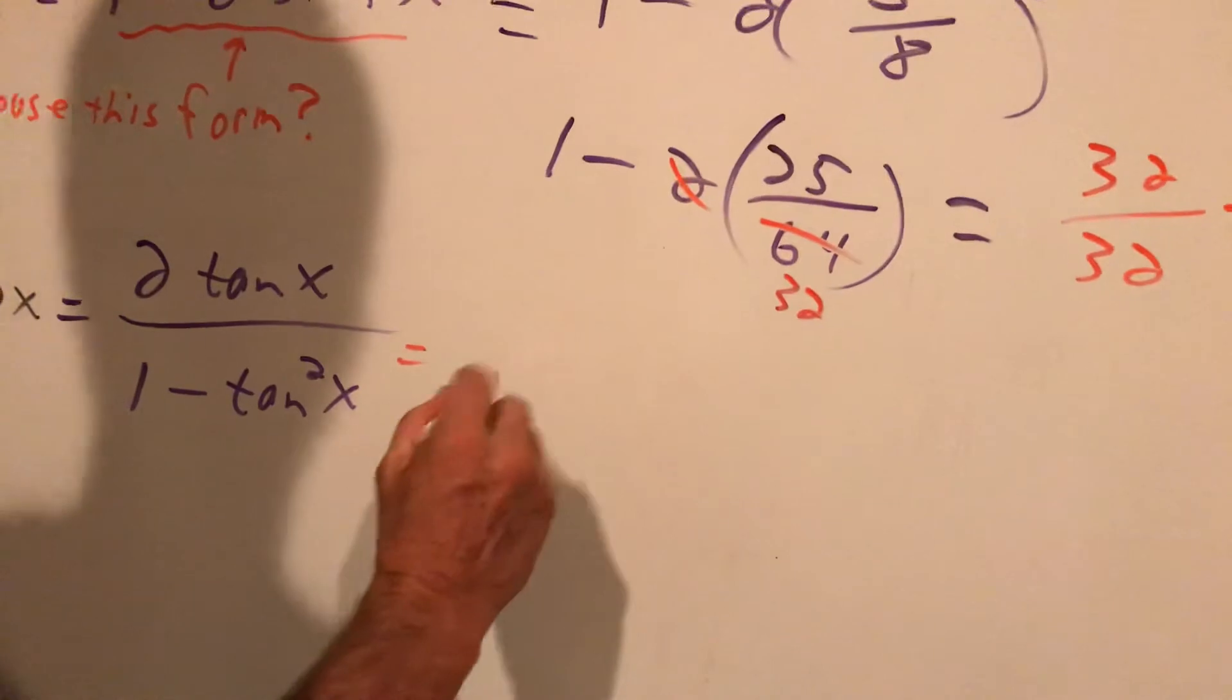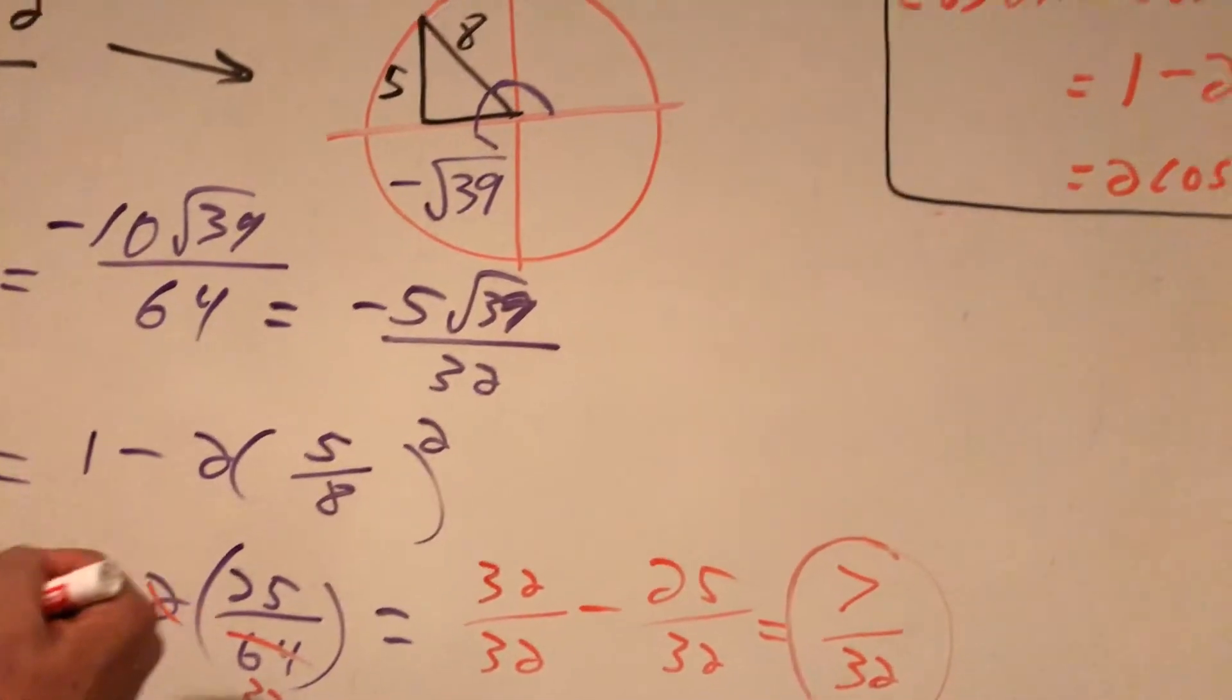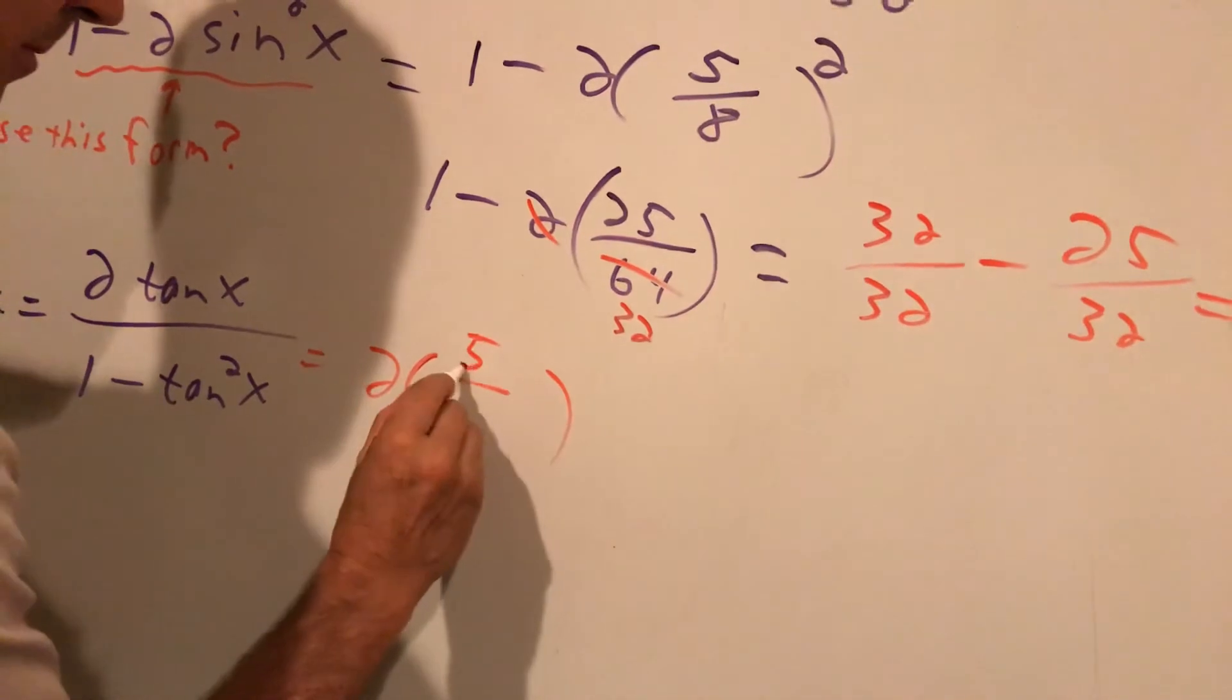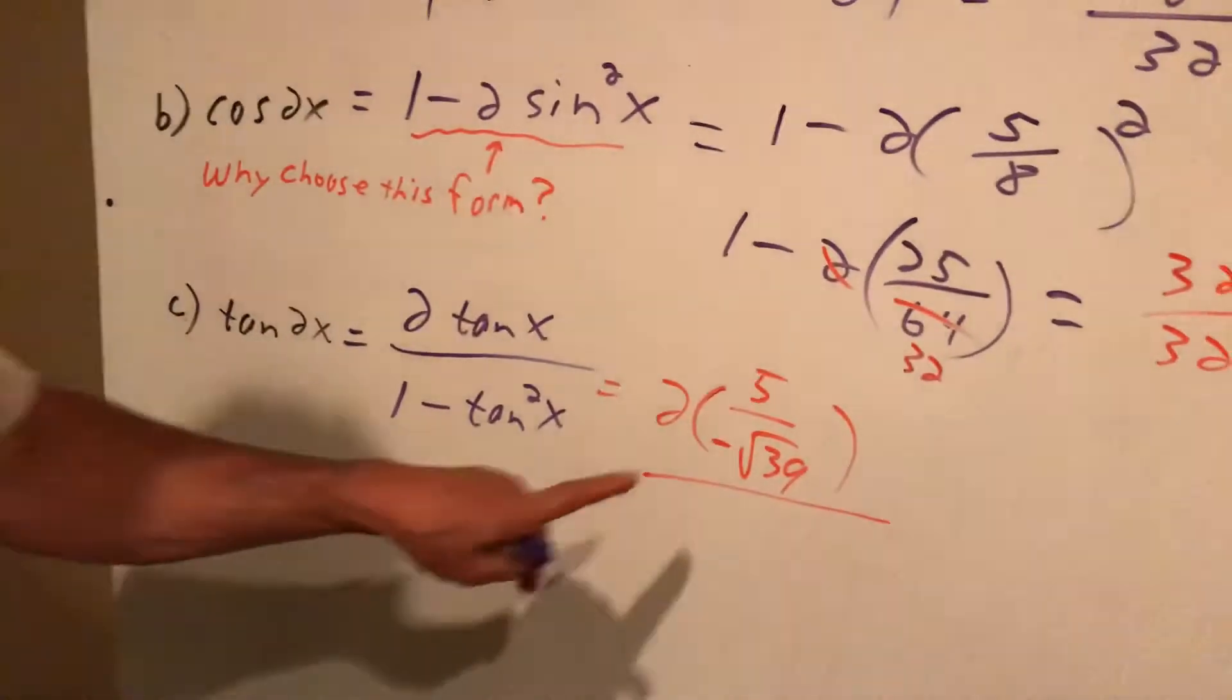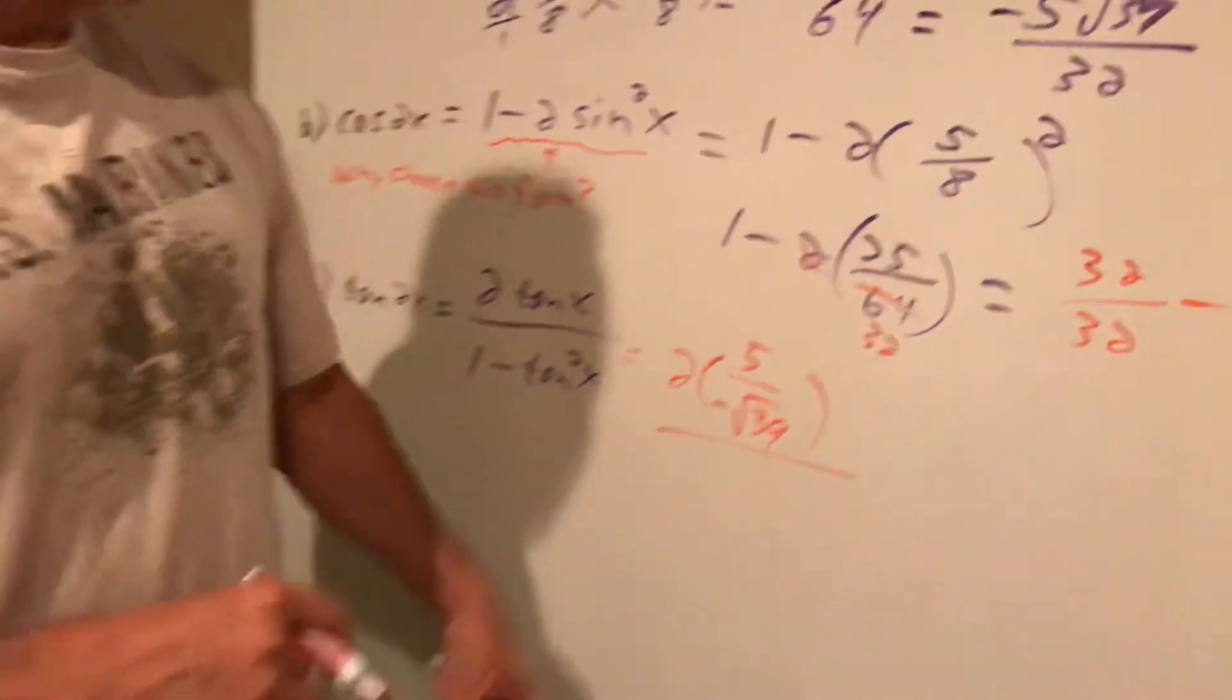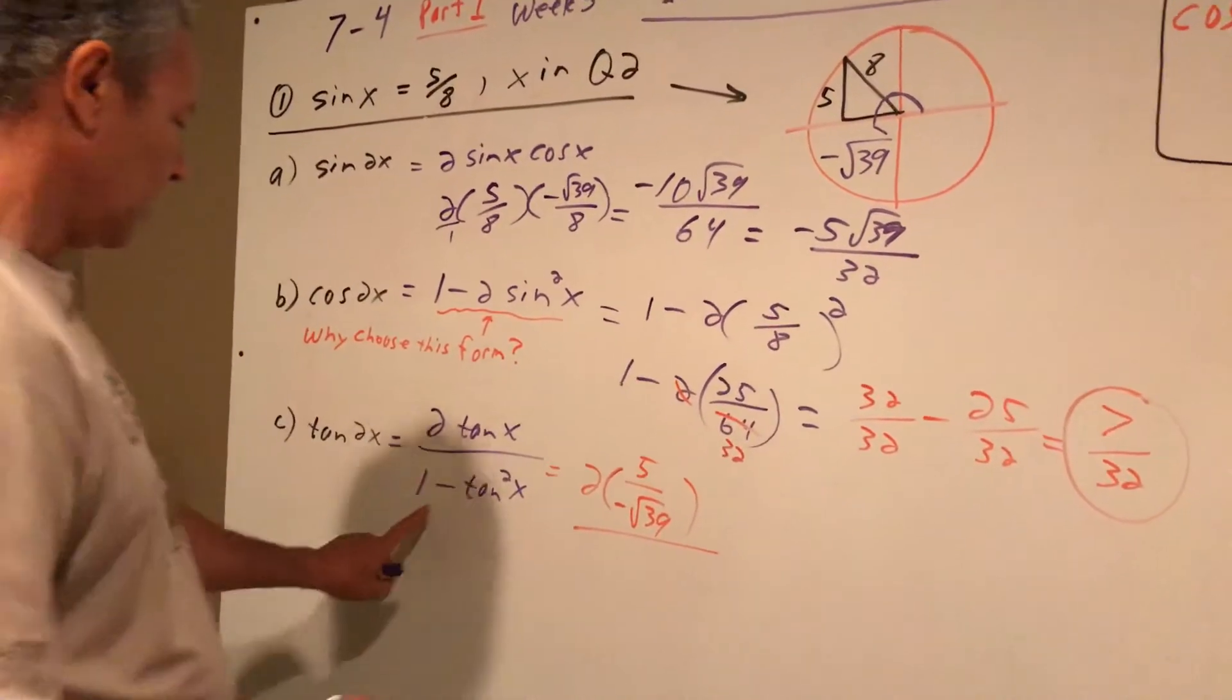So this one equals 2 times tangent of x. Well, if I come up here, tangent is opposite over adjacent. It's 5 over negative root 39. Okay, I'm going to caution you. You're wasting your time to simplify this right now. Just wait till the end. We'll see where we get. If I simplify it now, chances are I'm going to have to go back and do it all again later.